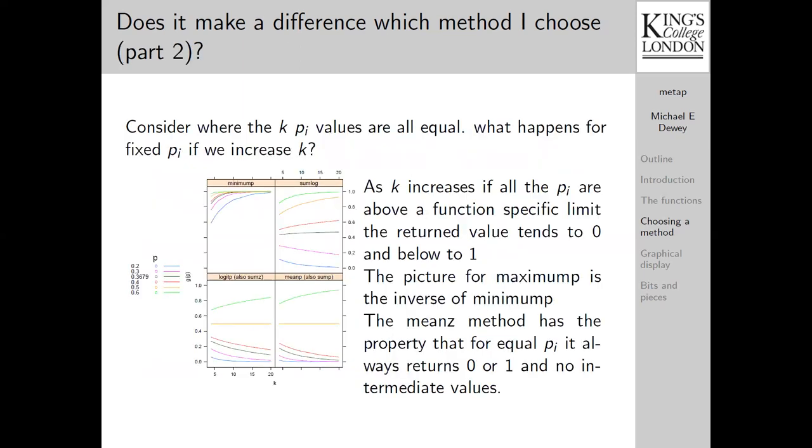Another way we can look at these is what happens if all of the p-values you had were equal. What happens for fixed p_i if we increase k? Well, if it's above a function-specific limit, the return value tends to 0. If it's below that, then it tends to 1. The picture for the maximum p shows the minimum p-value, which for constant p_i rapidly tends to 1 as k gets larger. Below it, the logit p and the mean p, and some others as well, show the return value being 0.5 if all the p_i are 0.5. If it's above that, then it tends to 1. If below, it tends more or less rapidly to 0.